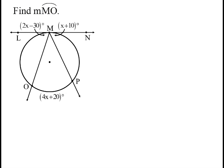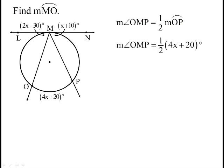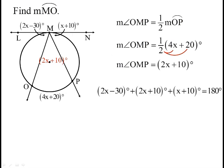So now let's see if we can put this to practice. See if you can find the measure of arc MO. You know that angle OMP — this angle right in here — is going to be half the measure of this arc. So I'm going to distribute one-half through 4x plus 20, and I'm going to see that this angle is going to be 2x plus 10. So now I have these three angles, which are all supplementary — they all add up to 180 because of this straight line here. So I can just figure out what x is from that. Do some quick algebra — x turns out to be 38.